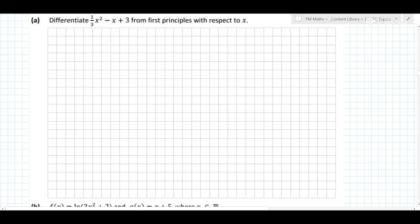So this question is absolutely beautiful. If you've done any revision, you should really know first principles. But first of all, you need to know the formula for first principles. So f dash of x, or the first derivative, is equal to the limit as h goes to zero of f of x plus h minus f of x, all over h.